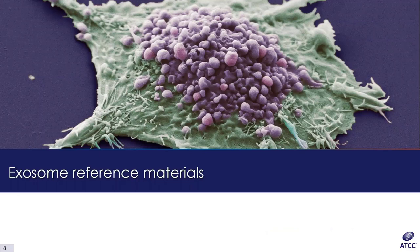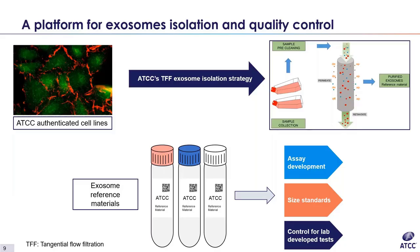This brings us to the second part of the talk. I would like to give an overview of ATCC's exosome isolation strategy and quality control performed on purified exosome reference materials. This slide shows ATCC's exosome isolation strategy from cell culture medium. To begin exosome isolation, we always use well-characterized and authenticated ATCC cell lines. We have developed a novel tangential flow filtration-based exosome isolation strategy. Briefly, large volumes of conditioned media are collected from the cells, then centrifuged to remove dead cells and debris in a pre-cleaning step. The clarified medium is then filtered, washed, and concentrated using TFF. The retained fraction contains purified exosomes, which are used for downstream characterization and analysis.